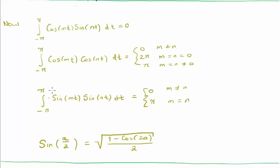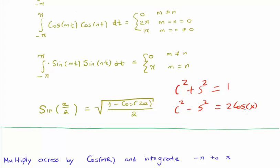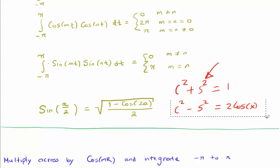Pretty much the same thing happens when we integrate the product of sines: when m equals n we're integrating sine squared, and we get pi. The last thing we need is the double angle formula in order to integrate cosine squared and sine squared. We note that cos²x + sin²x = 1 and cos²x − sin²x = cos 2x. Adding these gives the double angle formula for cosine squared in terms of cosine 2x, and substituting sin²x = 1 − cos²x gives the formula shown on screen.